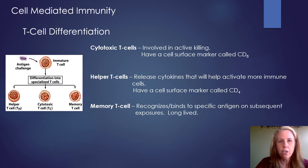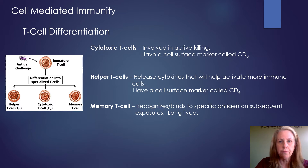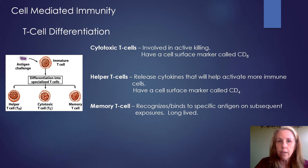Focusing just on cell-mediated immunity — the T cell has already been activated and knows what the antigen looks like, and now it's going to differentiate. T cells will differentiate into three major types: the cytotoxic T cell, the helper T cell, and the memory T cell. If you go on to take immunology, you'll learn about some other types of differentiated T cells, but these are the three big ones.